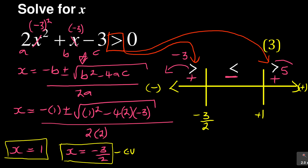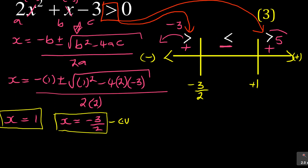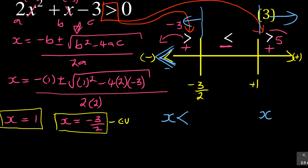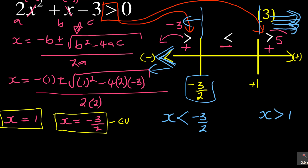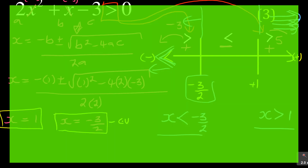Now I can write my answer. Looking at the original inequality, which has a greater-than sign, I match it to the positive regions. Since the positive regions are on the outside — to the left and to the right — x is less than negative 3 over 2, or x is greater than 1. That is how you write your two answers. I hope this makes sense, and I'll give you another example in the next lesson.